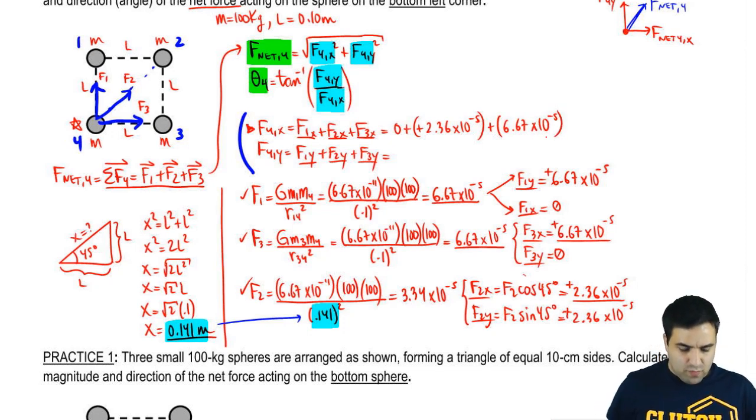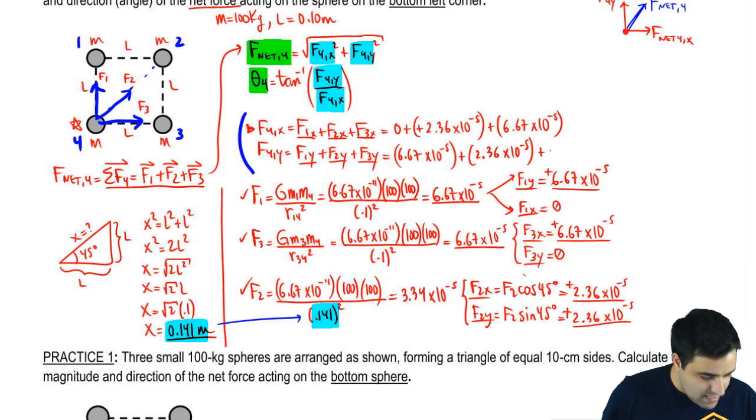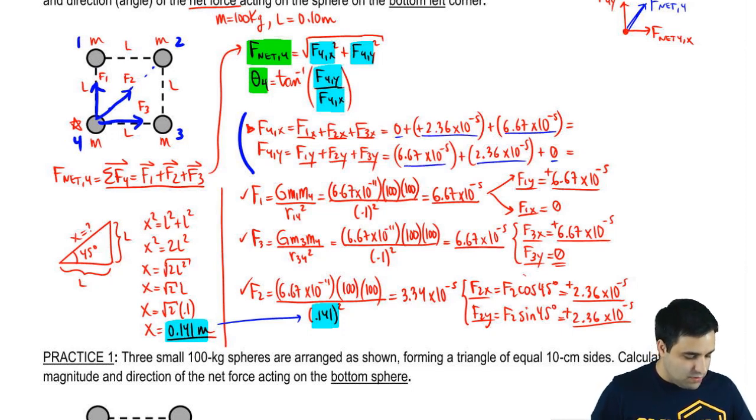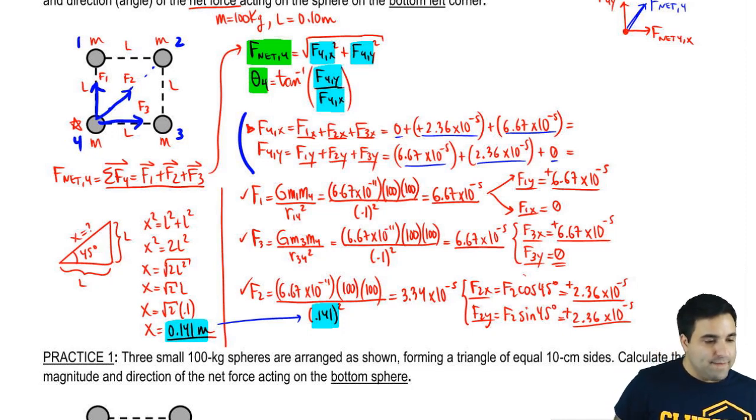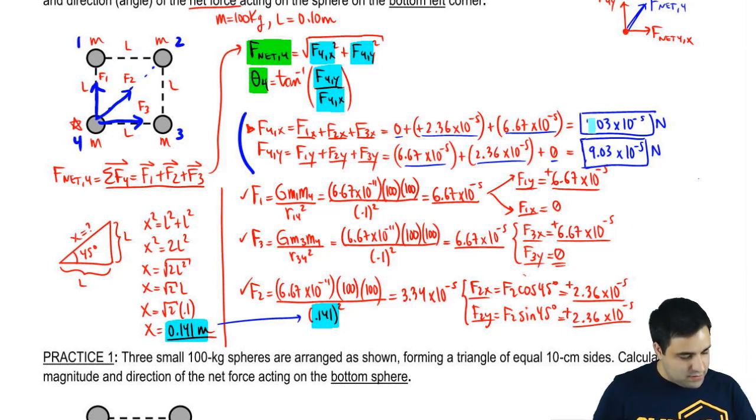If you go to the Y axis, I have F1Y. F1Y right here, 6.67 times 10 to the negative 5th. F2Y is this number, 2.36 times 10 to the negative 5th. And F3Y is 0. And you might notice that these numbers, they both have a 0. So there's a lot of symmetry here. All these numbers are the same. So you're going to get the same answer for both. And it's going to be completely symmetric. The answer will be, for both of these guys, 9.03 times 10 to the negative 5th Newtons.